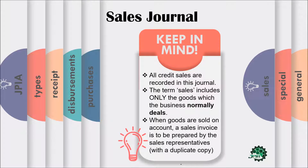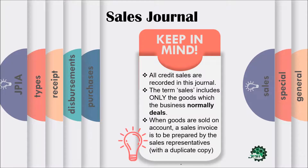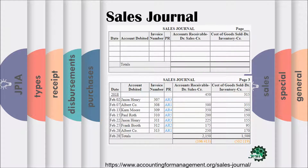For the sales journal, keep in mind that all credit sales are recorded in this journal. The term sales includes only the goods which the business normally deals with. When goods are sold on account, a sales invoice is to be prepared by the sales representatives. In this slide, you'll see an example of a sales journal — showing the date, then the description or the name of whom the account is for, then the folio number, then its respective debits and credits. In this example, the company is using the perpetual inventory system since they use the cost of goods sold and inventory accounts.